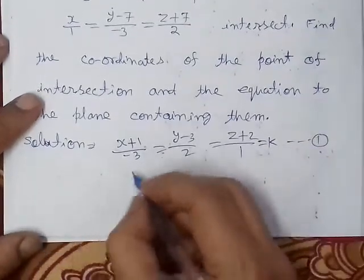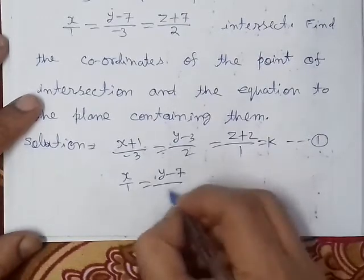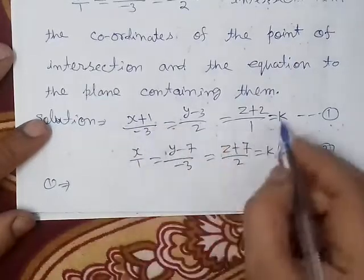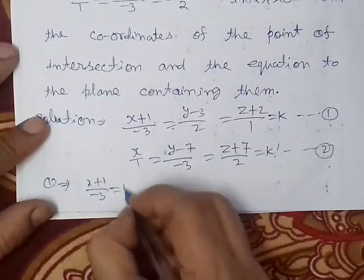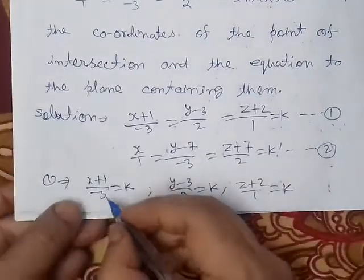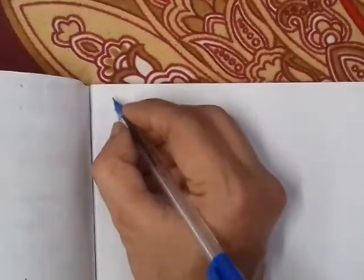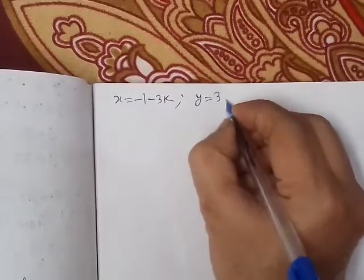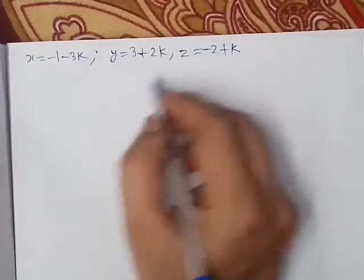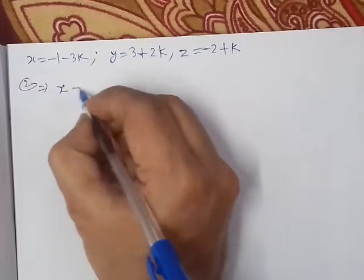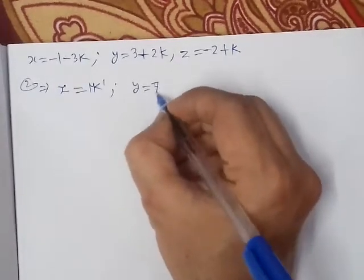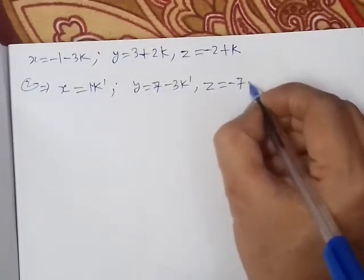Then the second line equation is: x/1 = (y-7)/(-3) = (z+7)/2, which we call equation number 2. From equation number 1, we set each ratio equal to k, giving us: x = -3k - 1, y = 2k + 3, z = k - 2. From line 2, setting each ratio equal to k', we get: x = k', y = 7 - 3k', z = -7 + 2k'.